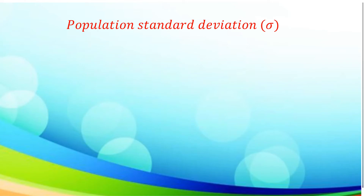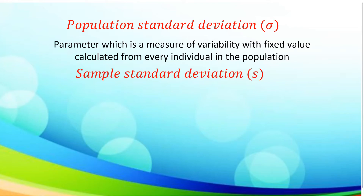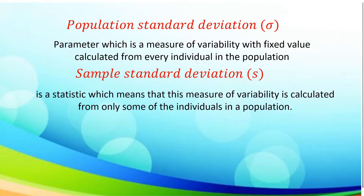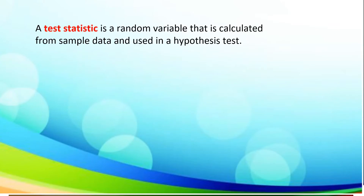Population standard deviation, with the symbol sigma, refers to the parameter which is a measure of variability with a fixed value calculated from every individual in the population. Sample standard deviation, with small letter s, is a statistic, which means that this measure of variability is calculated from only some of the individuals in the population. Population variance, or sigma squared, indicates how the population data points are spread out. Now, let us define a test statistic, which is a random variable that is calculated from sample data and used in a hypothesis test.